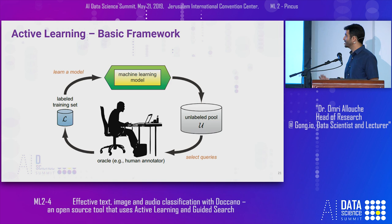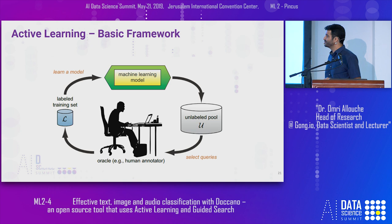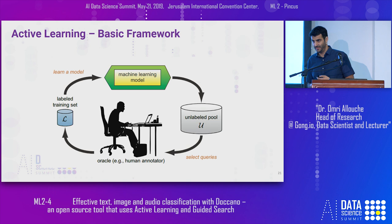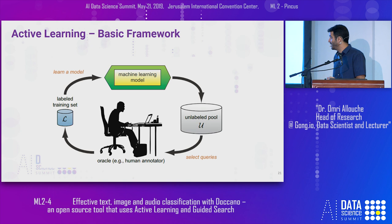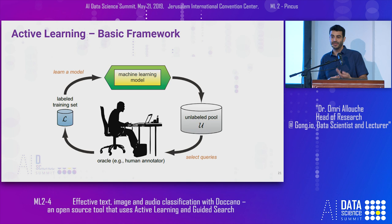Amazon recently released Ground Truth as part of SageMaker, which also makes use of active learning to efficiently teach machine learning models. So what does active learning actually mean? The basic framework is: we have a small set of labeled training data, we build a machine learning model, we apply this model on a large pool of unlabeled instances, and based on this pool we select observations to send to a human oracle. This oracle gives us the true labels and we continue the loop — so we don't just get a random set of labeled data, but those that would improve algorithm performance the most.